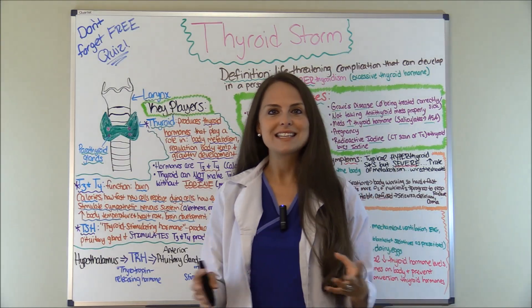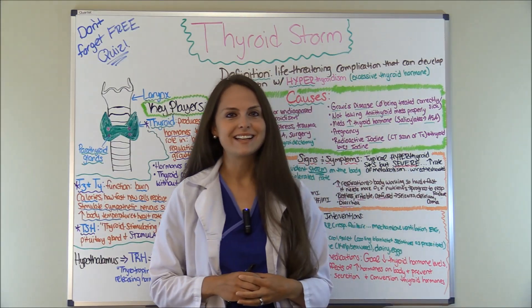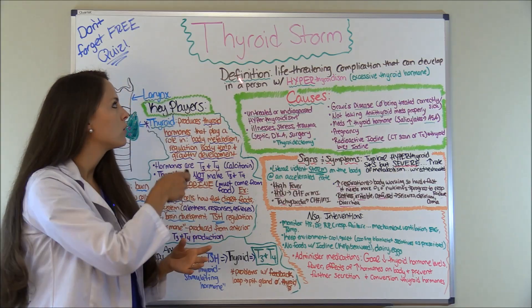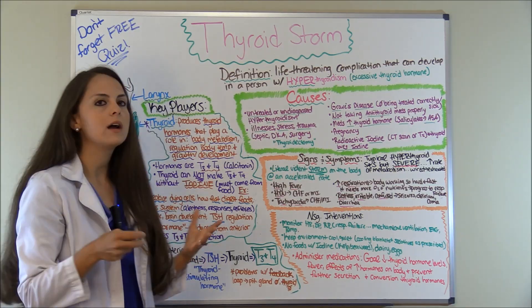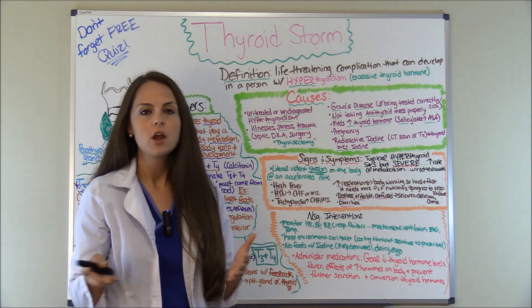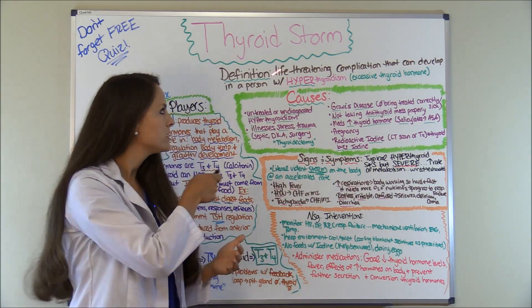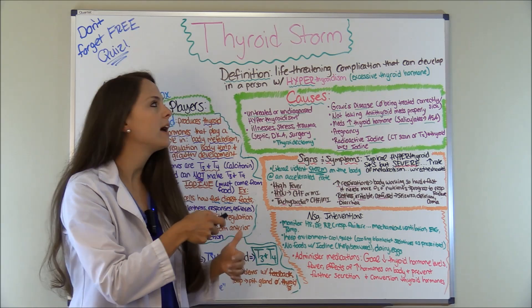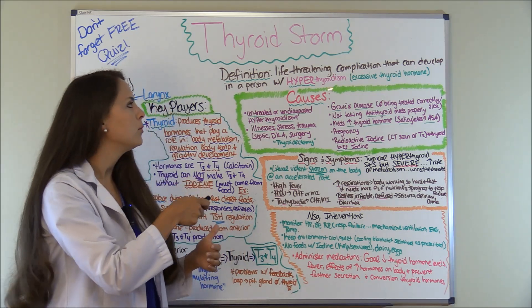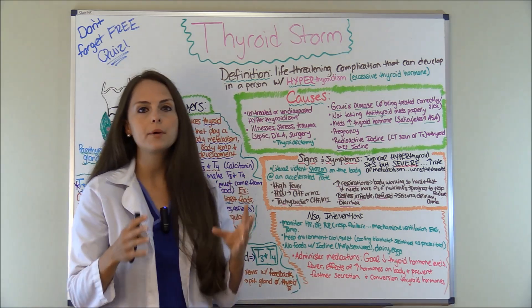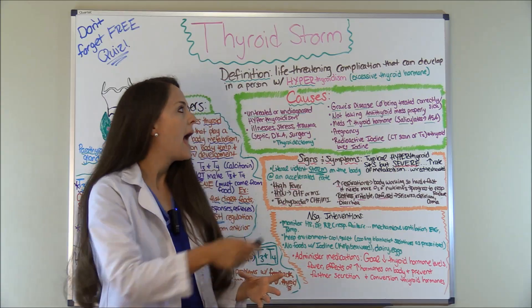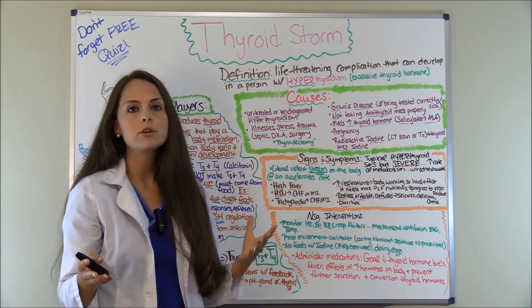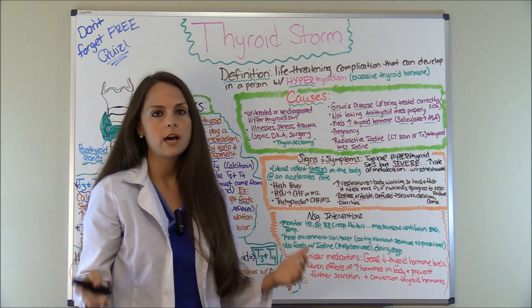So let's get started. First, let's talk about what a thyroid storm is — what is the definition? Thyroid storm is a life-threatening complication that can develop in people with hyperthyroidism, which is excessive thyroid hormone production.